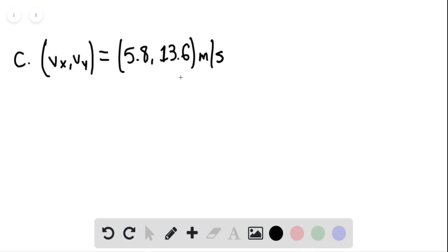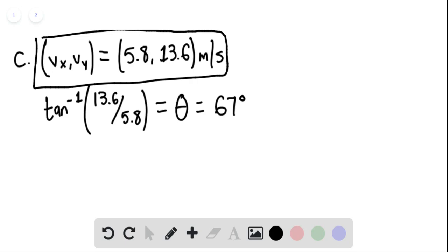Arctan of 13.6 divided by 5.8 gives us the angle or direction, 67 degrees. So we have the final velocity in vector notation and the direction of 67 degrees. That is the end of the solution. Thank you for watching.